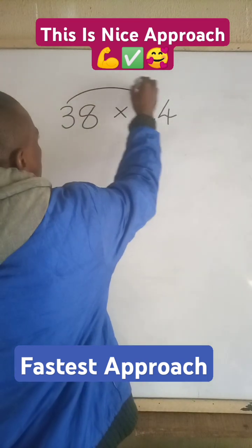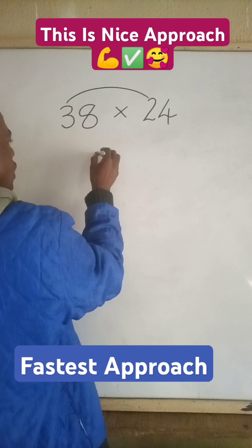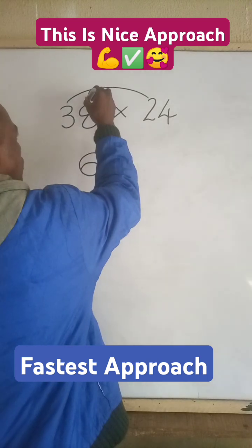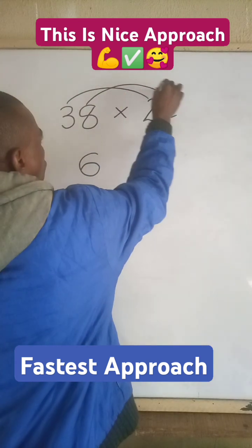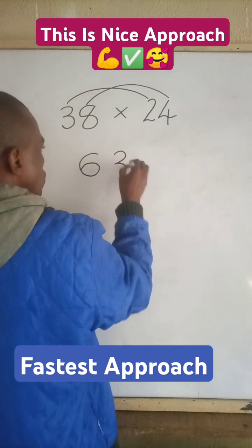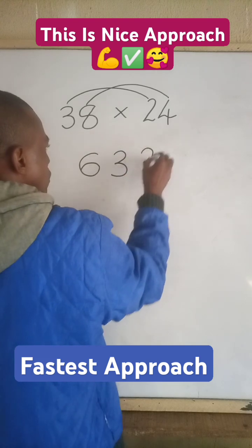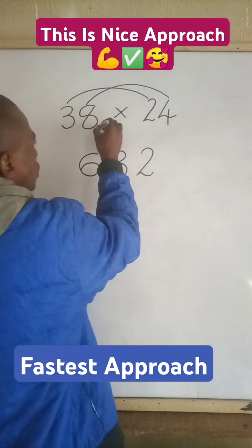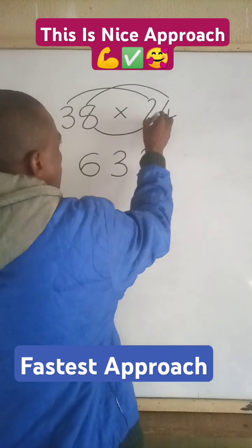3 times 2, it will give us 6. Now 8 times 4, it will give us 32. So the next thing that I will do now is multiply the middle numbers. 8 times 2, it will give us 16.